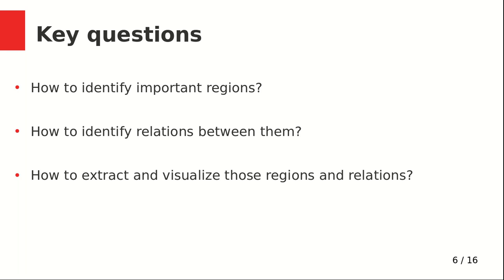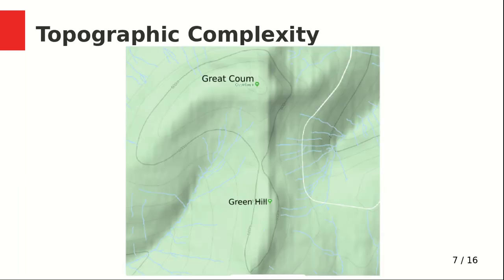The key questions in this approach are: one, how to identify these regions; two, how to identify the relationships between them; and of course, how to extract and visualize those regions and relations and present them to scientists so they can understand what is happening in the data they produce. Here is a sample dataset — a topographic map of the Yorkshire Dales, showing two hills: Green Hill and Great Crone. In a topographic map we see lines called contours, which represent points of equal elevation.